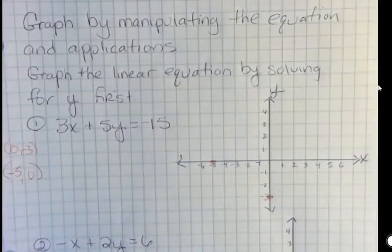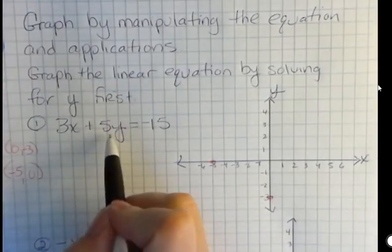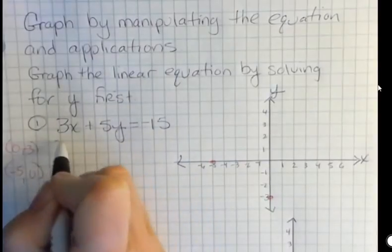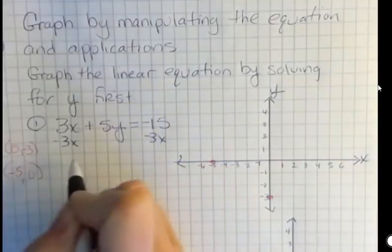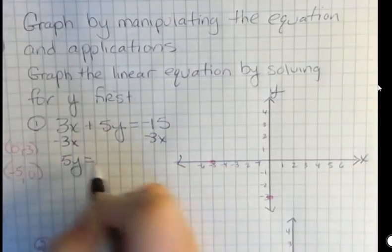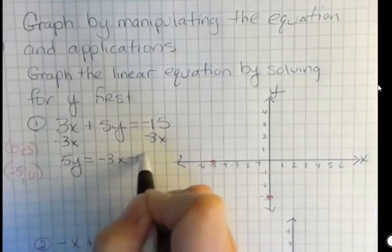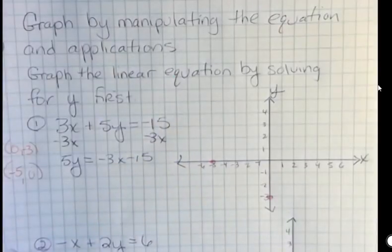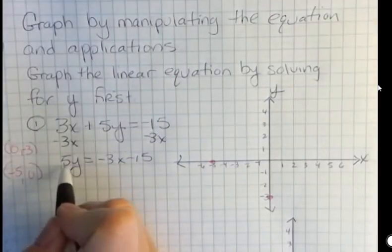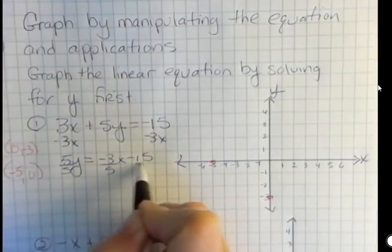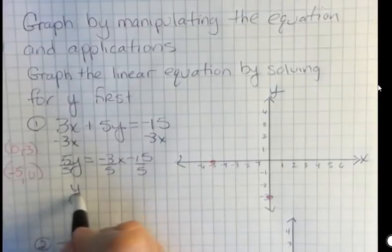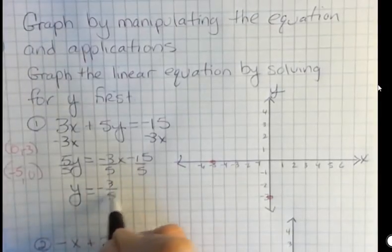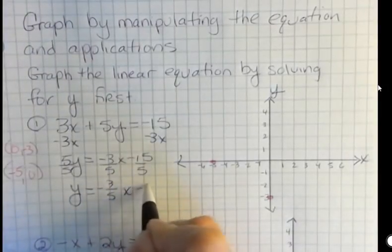What they're asking you to do is graph the linear equation by solving for y first. So what they want you to do is get y by itself. Subtract 3x from both sides, and that becomes negative 3x minus 15. Then divide everything by 5 to get that y by itself. This is just rearranging a formula to solve for a specific variable. So y equals negative three-fifths x minus 3.